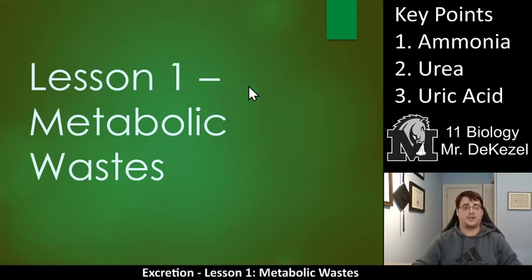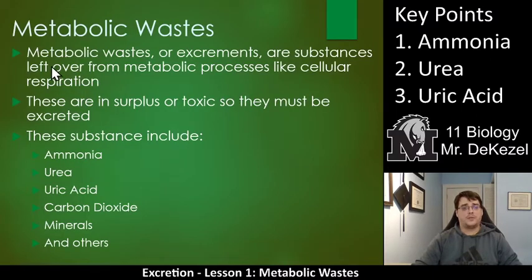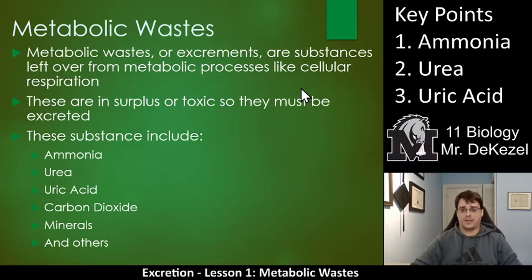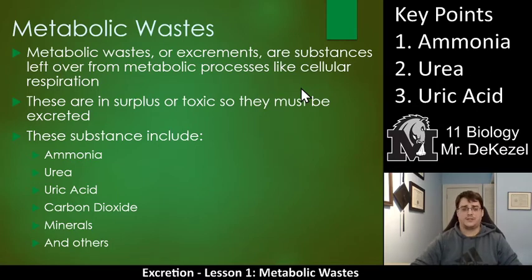Let's get into the types of metabolic wastes first. Metabolic wastes, or excrements, are substances that are left over from metabolic processes like cellular respiration, or anything else that goes on in your body to make it work. These are in surplus, so we might have too many of them, or they might be toxic. For those two reasons, we need to get rid of them or excrete them. Some of these substances include ammonia, urea, uric acid, carbon dioxide, different vitamins and minerals. If you intake too much vitamin C, you will need to excrete it because you can only absorb so much. And there are many, many different organic molecules that need to be filtered.